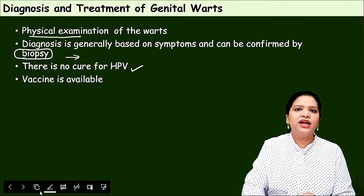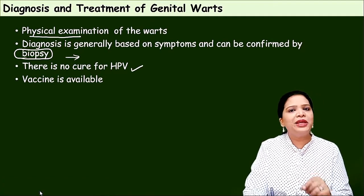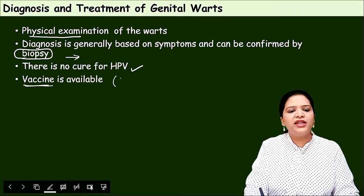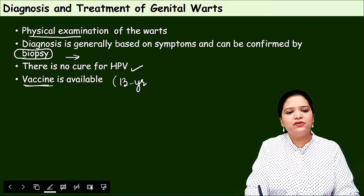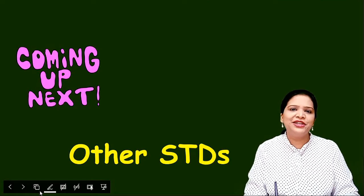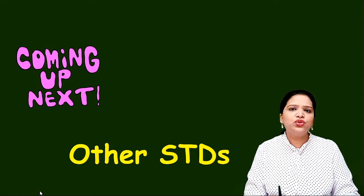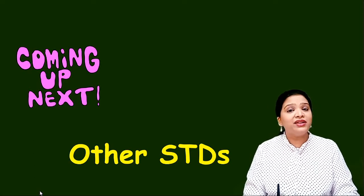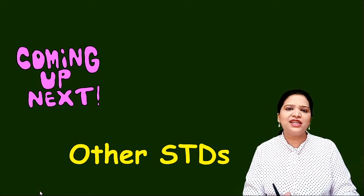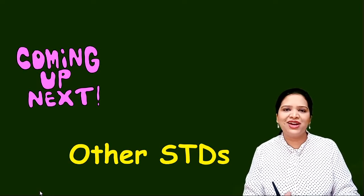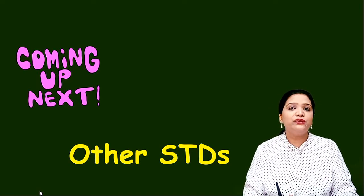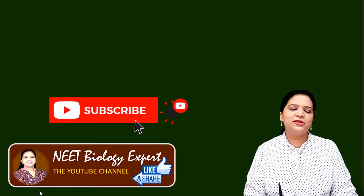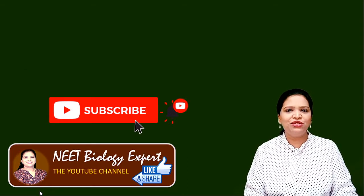There is no cure for human papillomavirus, but there is a vaccine available which can be given to teenage people from 13 years of age. These are the two important viral sexually transmitted infections: genital herpes and genital warts. Our next lecture will be on other sexually transmitted infections caused by viruses — hepatitis and AIDS. If you like this lesson, please like, share, comment, and subscribe to our channel NEET Biology Expert. Thank you.